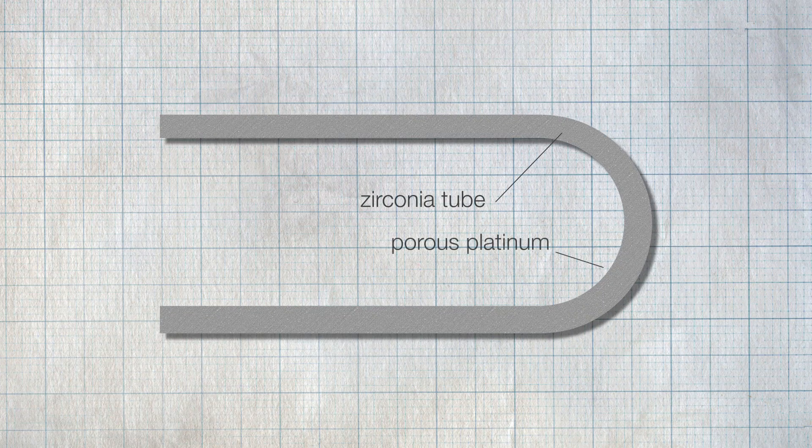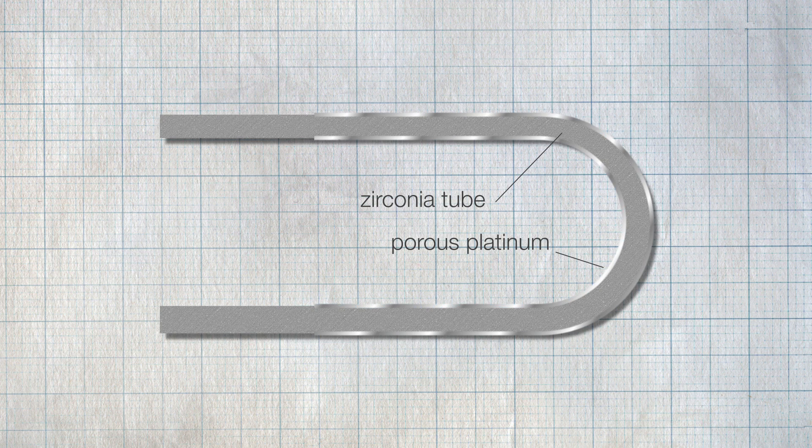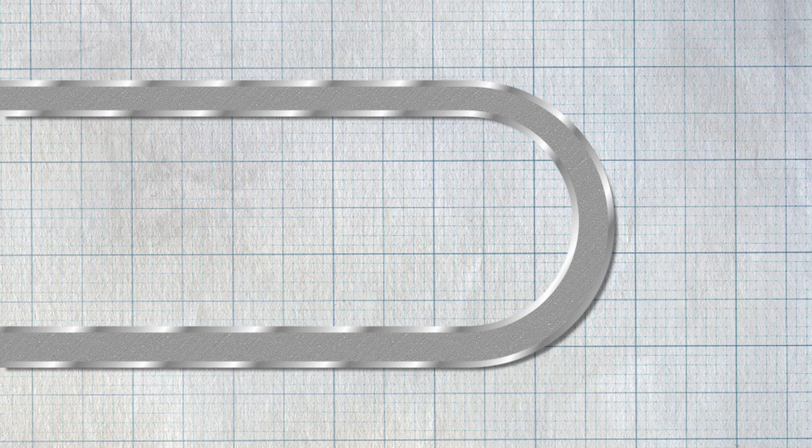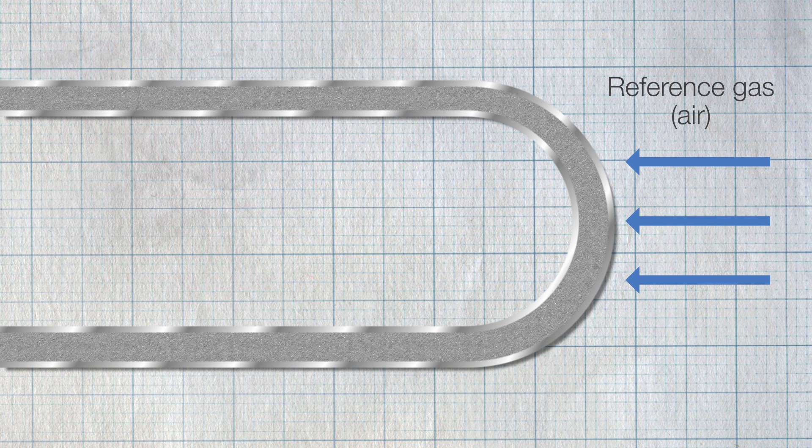The sensor consists of a thin piece of zirconium material. A supply of air is applied to one face of the sensor as a reference gas. The process gas being measured is applied on the opposite face.